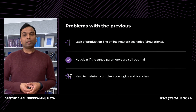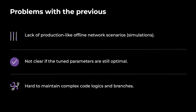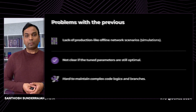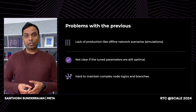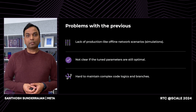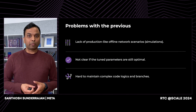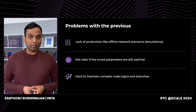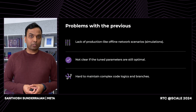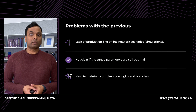We don't have good network scenarios for offline simulations, which resulted in multiple experiment iterations. And even after the experiment is done and rolled out, it is not clear if the optimal parameters are still applicable. For example, users might have moved on to new devices or new networks, making past optimizations no longer applicable. Also, the system diagram itself is really complex, and adding more parameters makes it complex code logic with lots of branches to maintain.